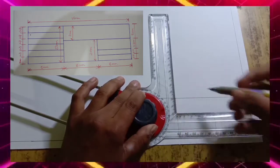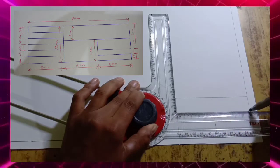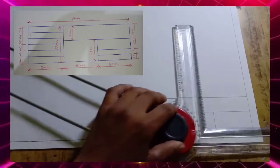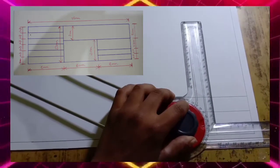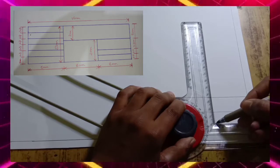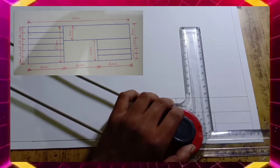Take 2 centimeters and draw the line horizontally on the sheet. Here, take 1.5 centimeters and draw the line horizontally.